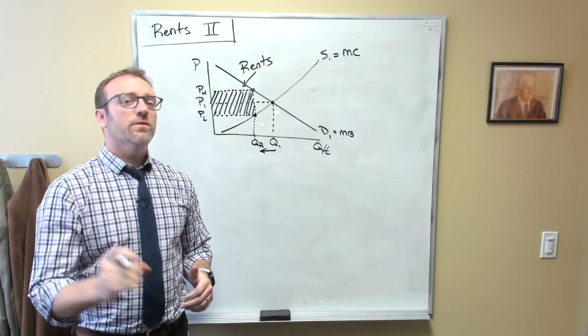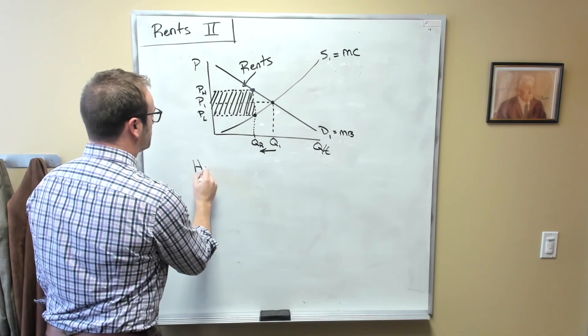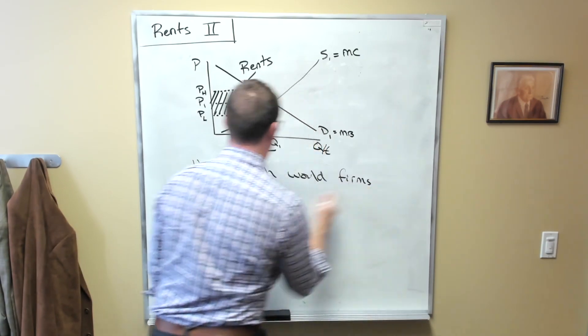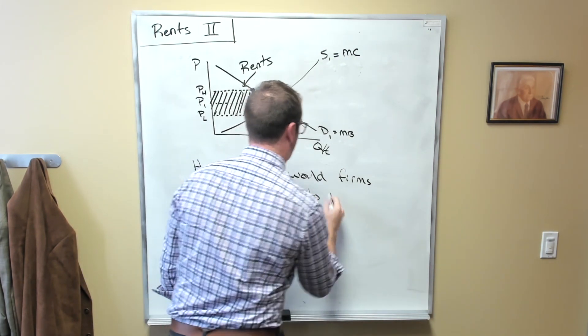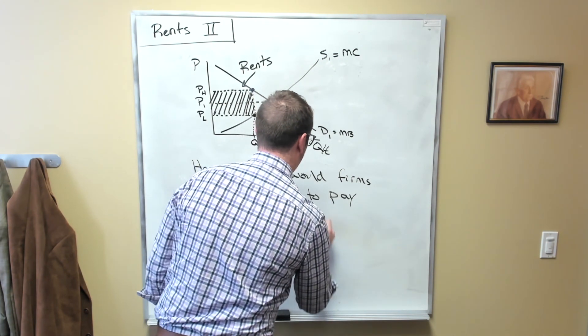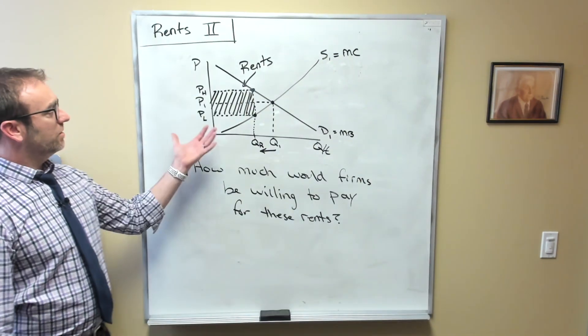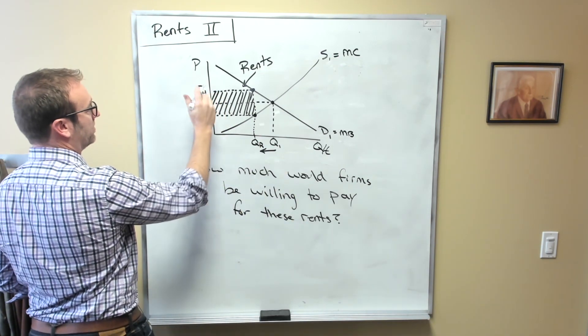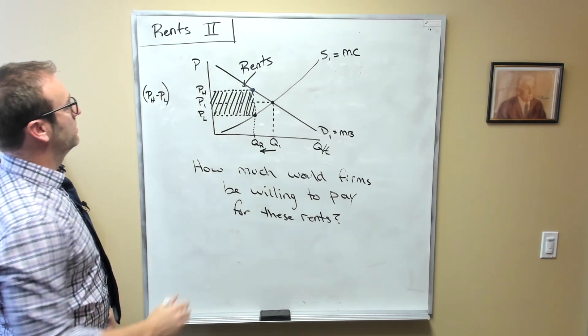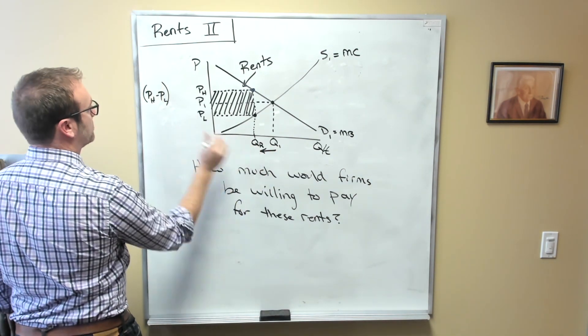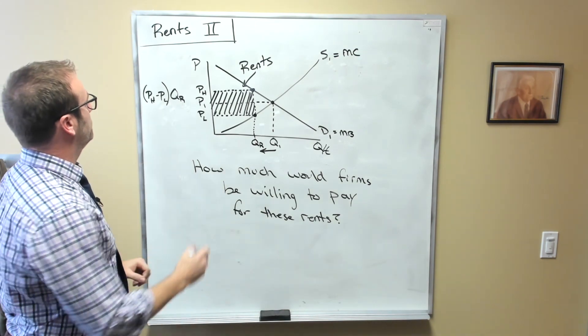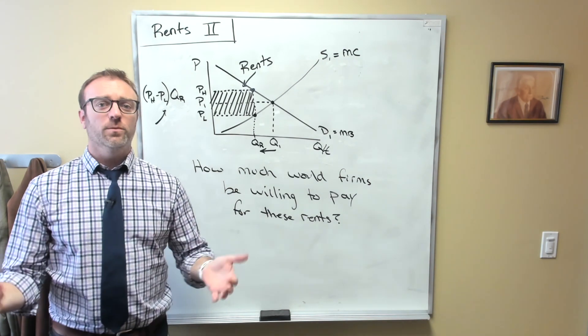Now, an interesting question, and one for political economy students, would be to ask, how much would firms be willing to pay? And specifically, how much would they be willing to pay for these rents? Well, we can easily calculate the value of this by noticing that the value is equal to the price high minus the price low, right? That's the height of this rectangle. And then we want the width of it. Well, that's just Q R. And so, how much would a firm be willing to pay in order to have these rents? Well, the maximum they'd be willing to pay is whatever this product is.